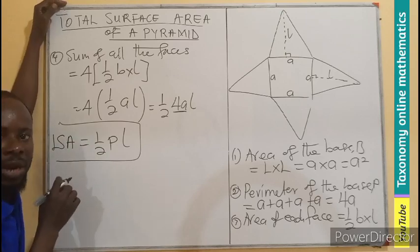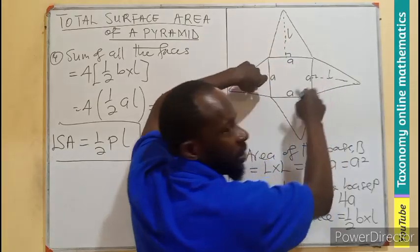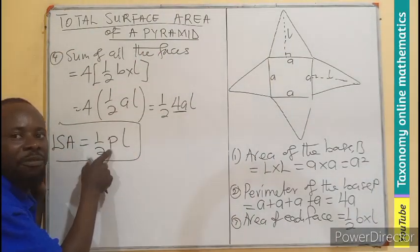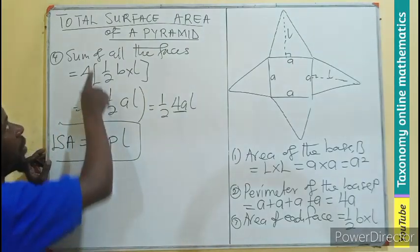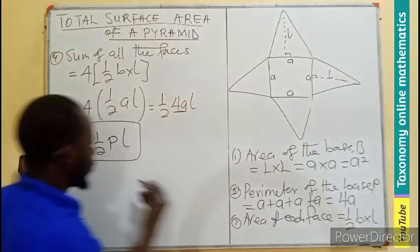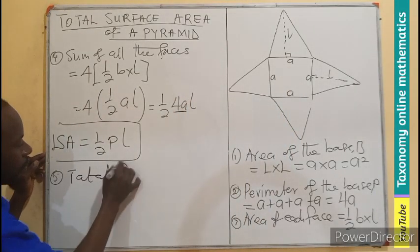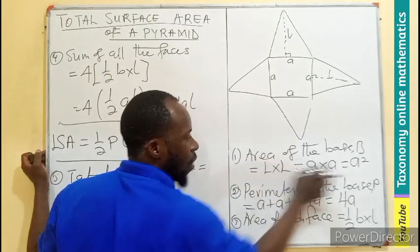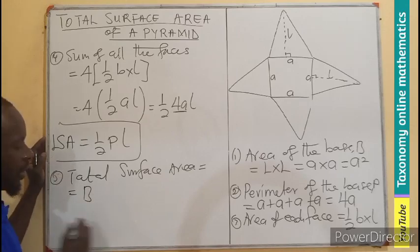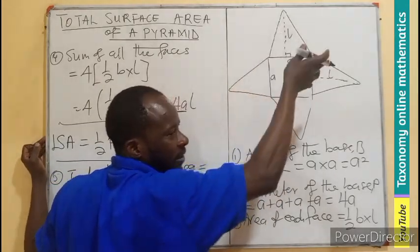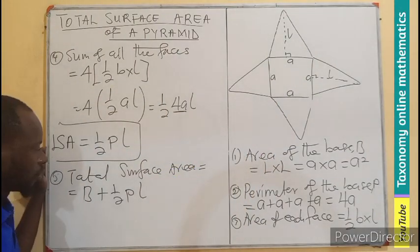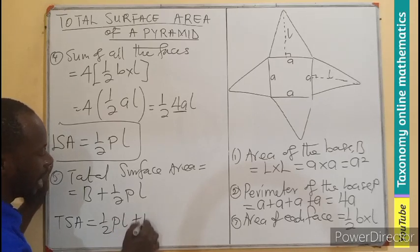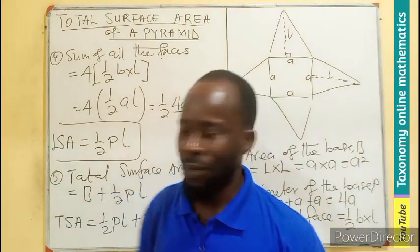The lateral surface area is ½PL. But we are looking for the total surface area, which includes the base. So the total surface area equals the area of the base B plus the lateral surface area ½PL. Therefore, total surface area of any pyramid = B + ½PL.